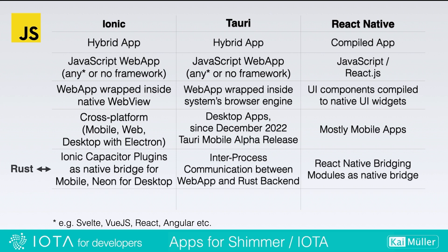When Rust comes into the game: Ionic can use Capacitor plugins as a native bridge for the mobile part and Neon for Electron. Tauri has interprocess communication between the web app and a Rust backend — Tauri is written in Rust at its core. React Native provides modules as a native bridge solution. Ionic is from the private company Ionic, Tauri is a community project, and React Native comes from Facebook.